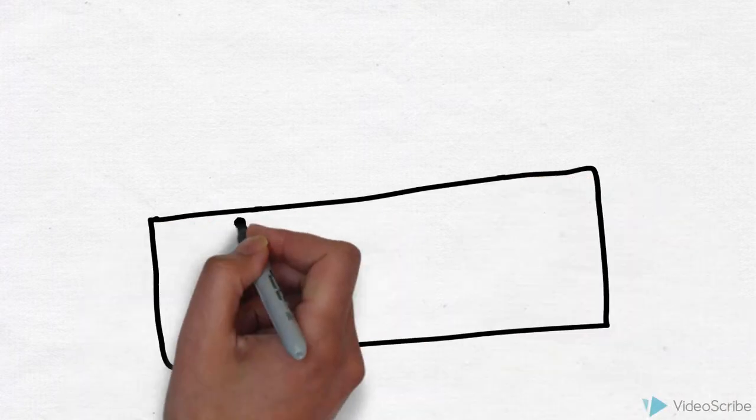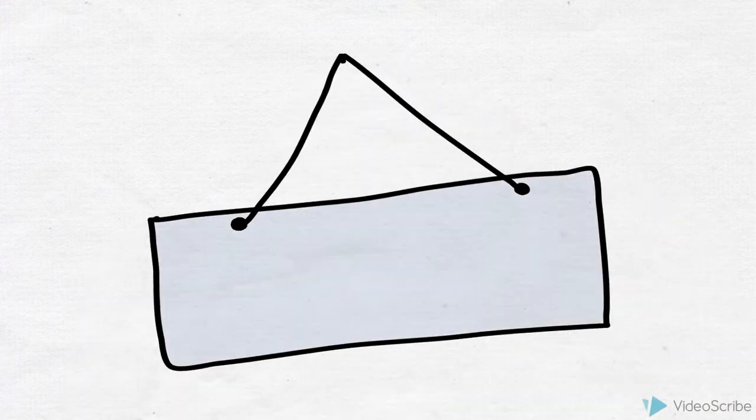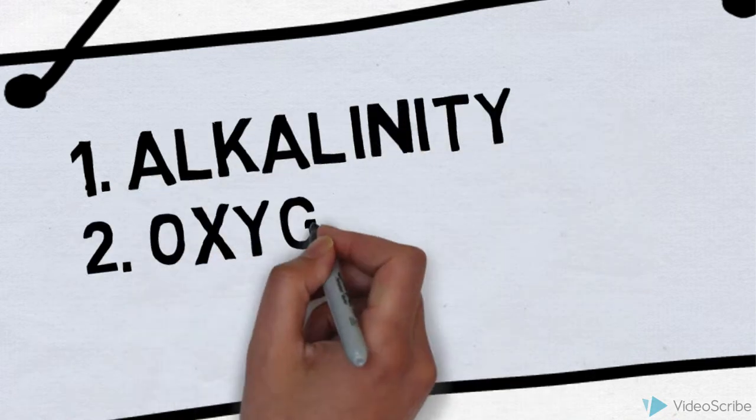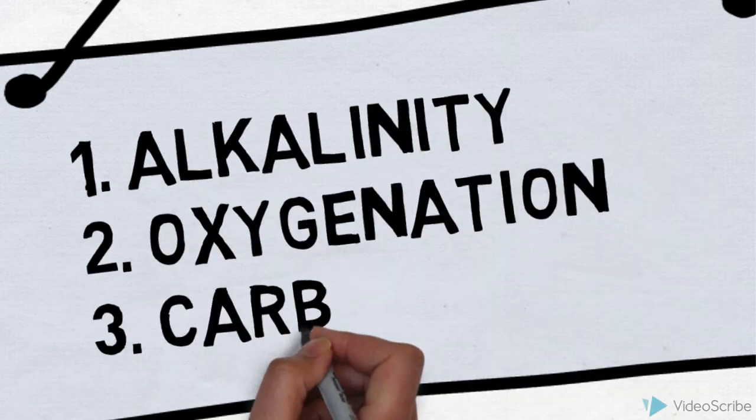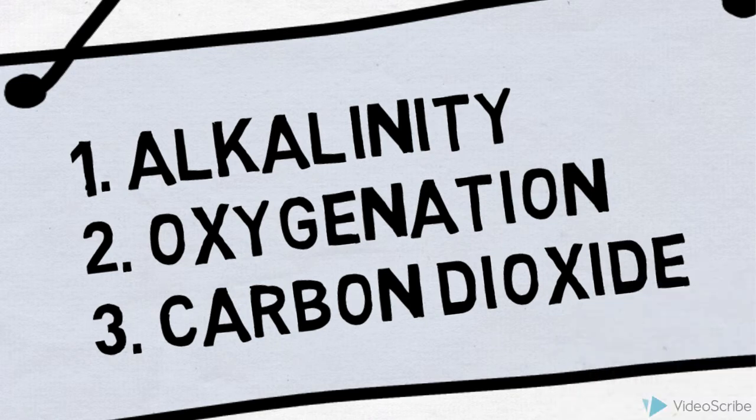Ultimately, it can be concluded that the control of breathing requires maintaining alkalinity of body fluids, oxygenation of arterial blood, and removal of carbon dioxide. However, these three systems are not directly related, which makes the order of importance of the three factors controversial.